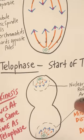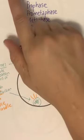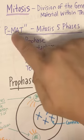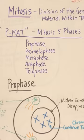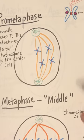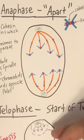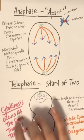As a review: mitosis is the division of the genetic material of the cell. You need to know P-MAT and what's going on in each phase. We had prophase, prometaphase, metaphase, anaphase, and telophase. Telophase occurs at the same time as cytokinesis.